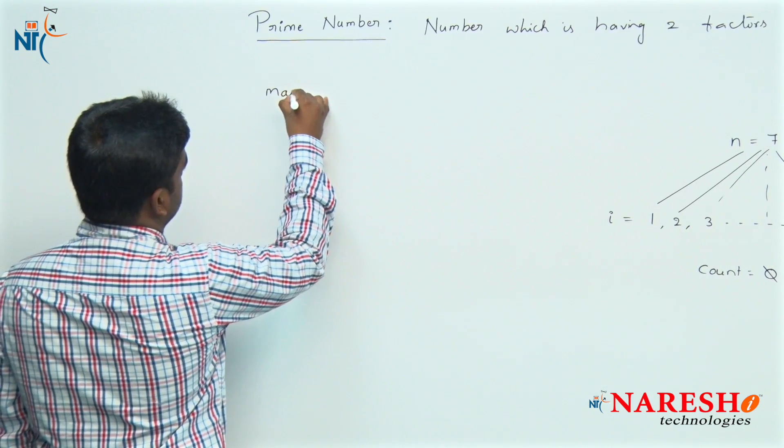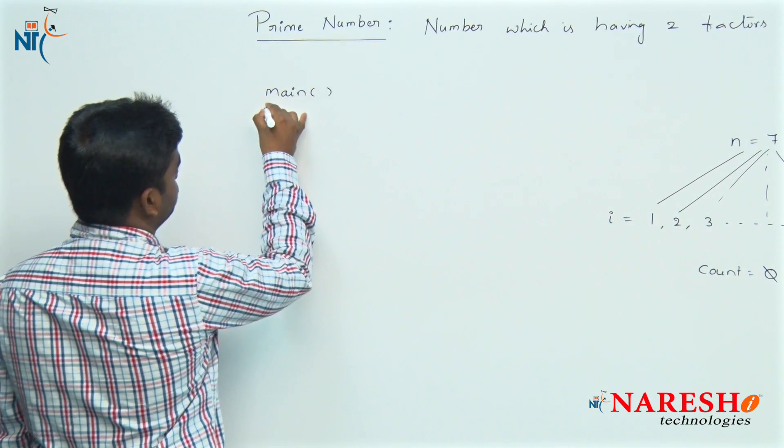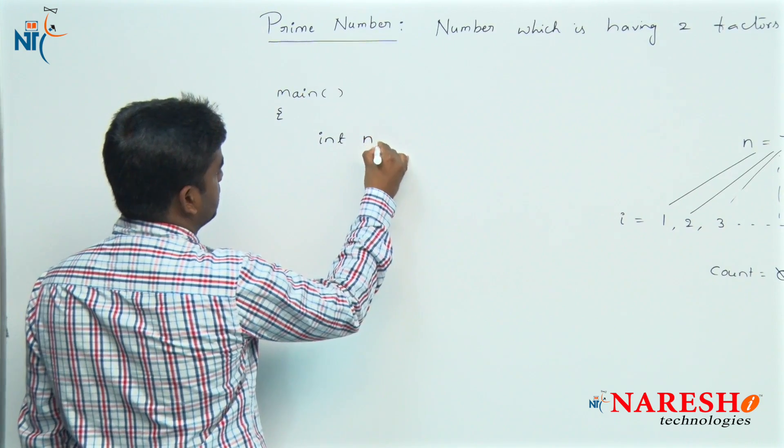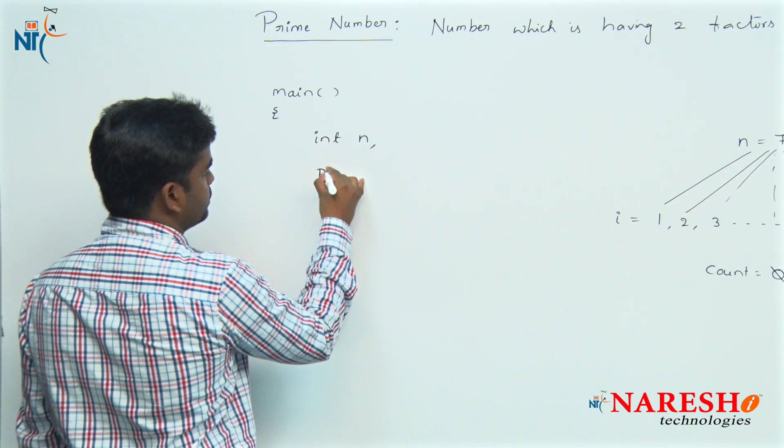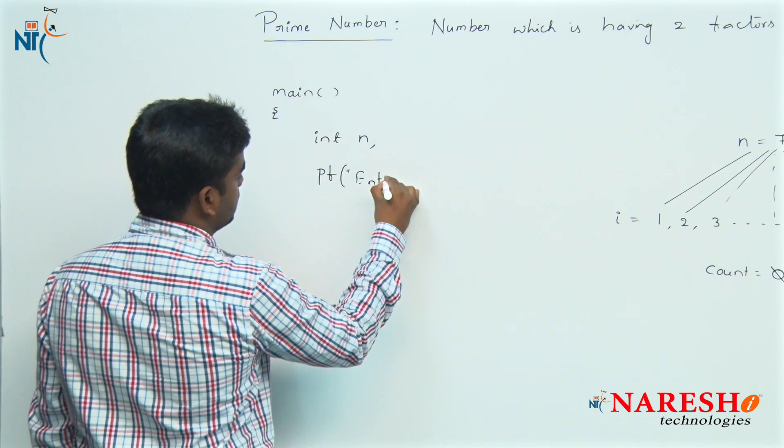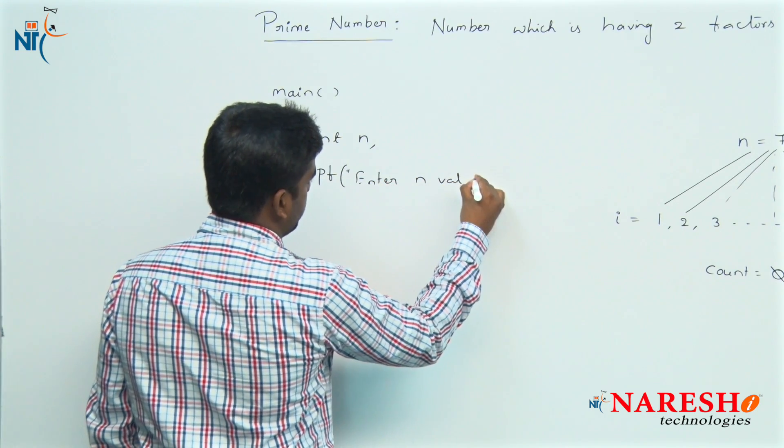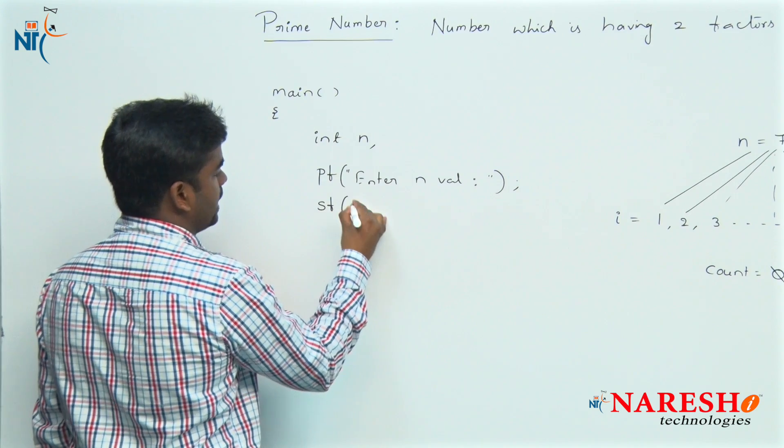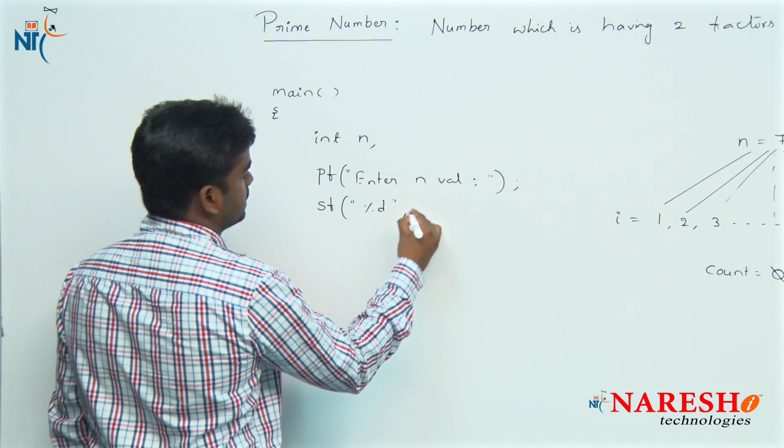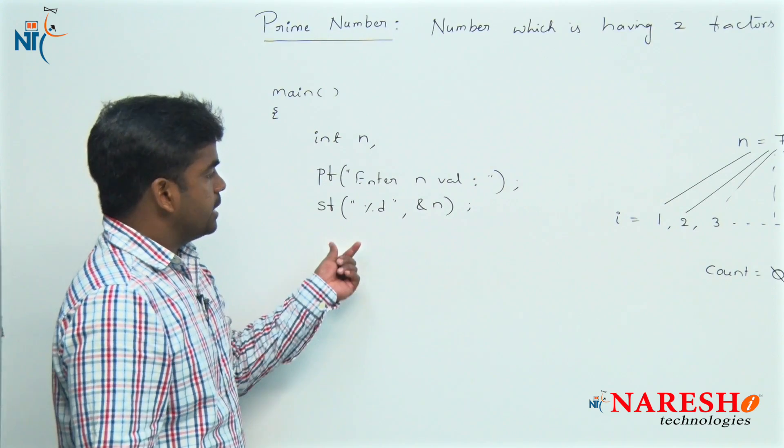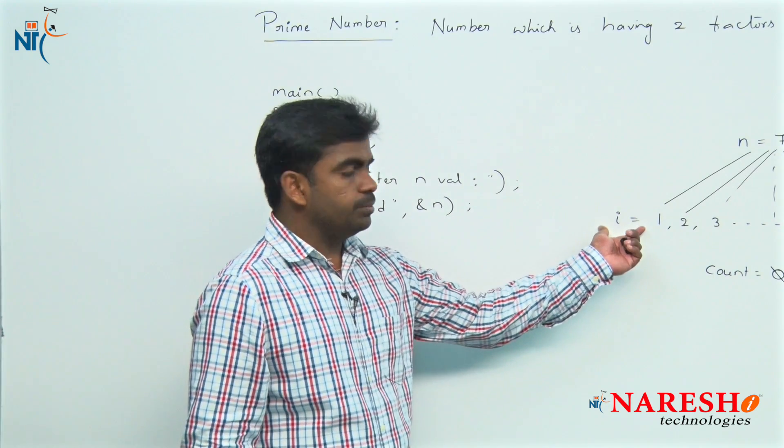I have started from the main function. I want to read N value, so I am declaring the variable. We are asking printf enter N value, they will input that one. We are reading using scanf, we are reading that integer into variable N. Next, we need to repeat the loop.